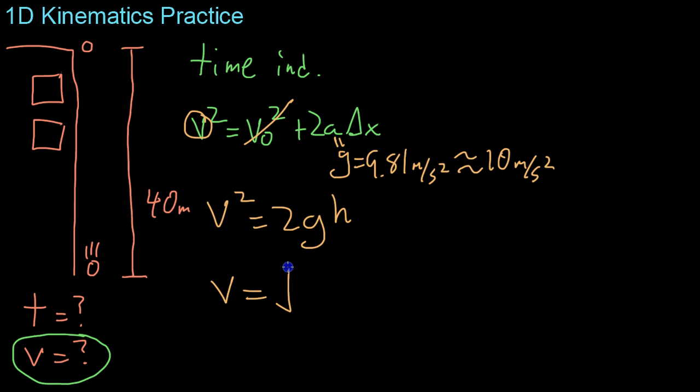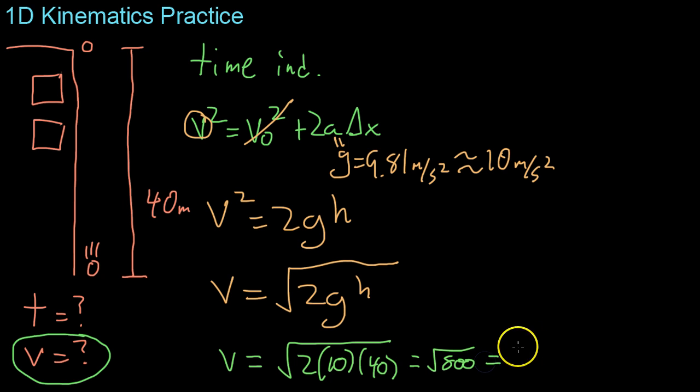So your velocity will be represented by these values. Basically your final velocity at the bottom will be root 2gh, and then all you have to do is plug in values. So you get root 2 times 10 meters per second squared approximately and 40 meters in height, which is root 800 or about 28.3 meters per second.